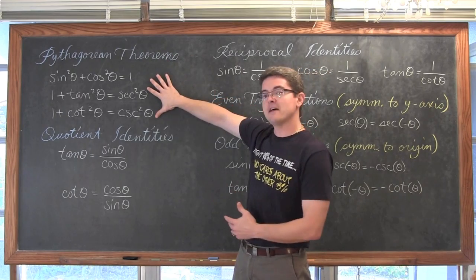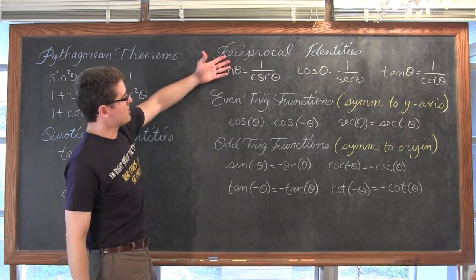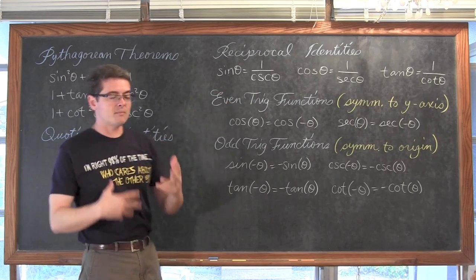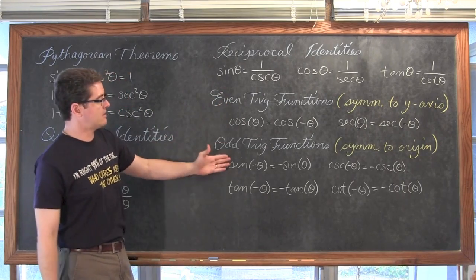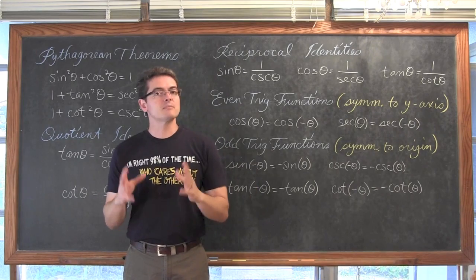We are going to be using the three Pythagorean identities, the quotient identities, the reciprocal identities, and some facts about being even and odd to help us work out these proofs.